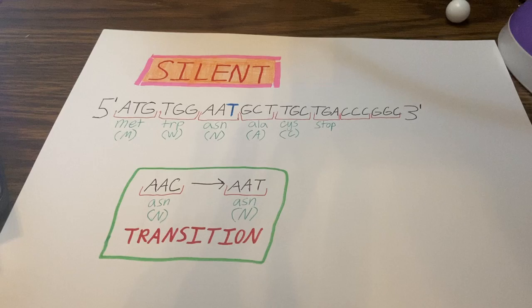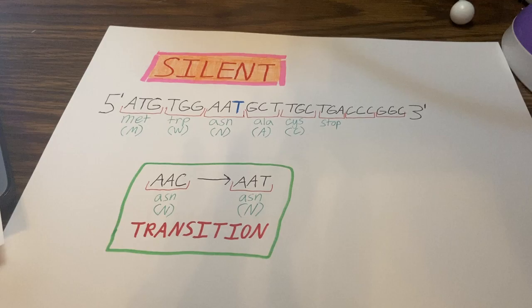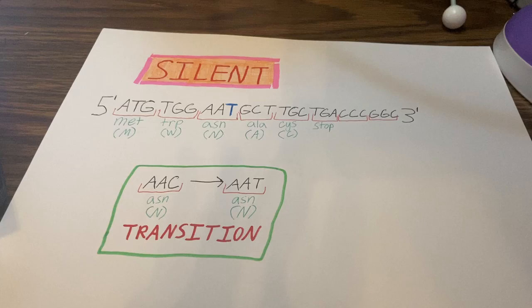The first mutation we are going to look at is the silent or synonymous mutation. As you can see, the original cytosine in the asparagine amino acid was substituted for a thymine. This substitution is known as a transition, where the bases substitute from purine to purine or pyrimidine to pyrimidine.